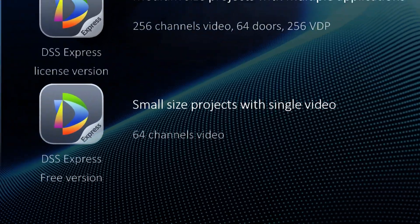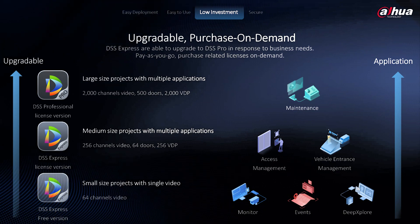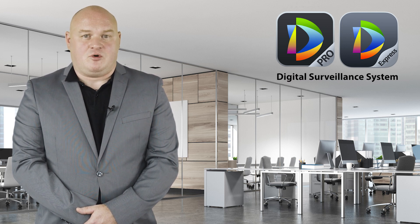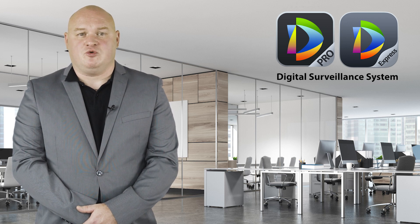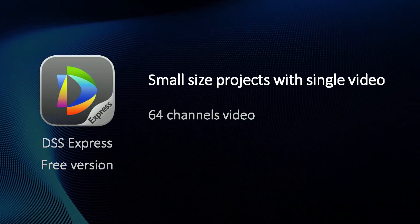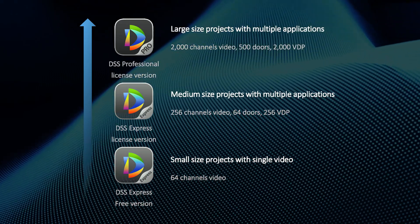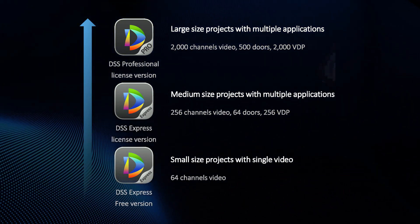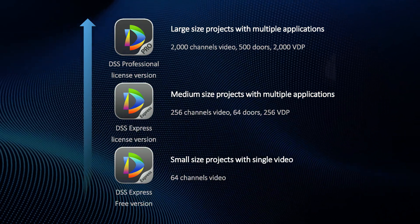Whether you have a small shop with a few cameras or a chain of stores with 20,000 plus, we have a solution for you. We offer an all-in-one platform with a wide range of products to suit your business needs, and you can easily upgrade or add functionality afterwards. Our free version, DSS Express, handles small-sized projects with up to 64 video live previews. DSS Express is also suited for medium-sized projects covering 256 video channels, 64 doors, and 256 VDPs. DSS Pro is suited for large-scale projects, supporting 2,000 channels, 500 doors, and 2,000 VDPs. For pricing, please contact our distributors.